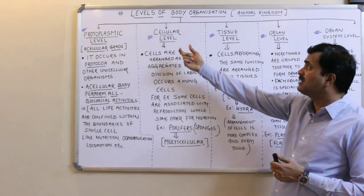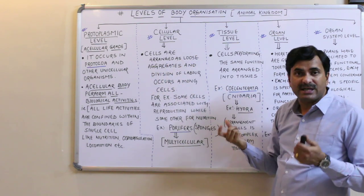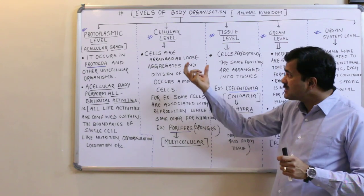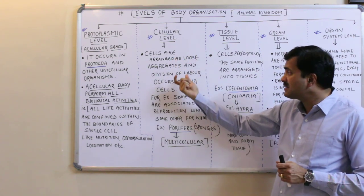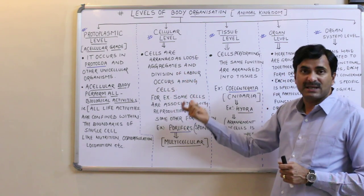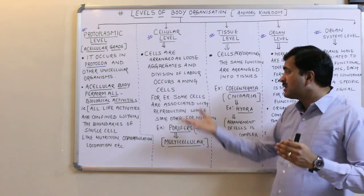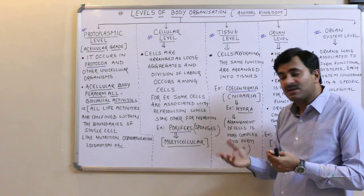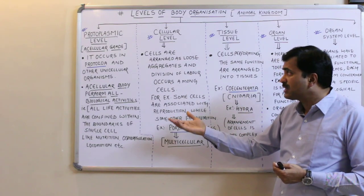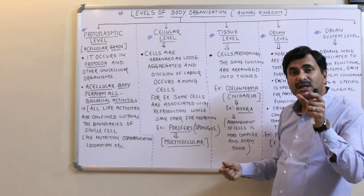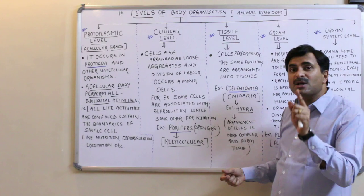The second grade is the cellular grade of body organization. Here, cells are arranged as loose aggregates, but tissue is not formed. Division of labor occurs among cells — different cells are given different types of work. Some cells are associated with reproduction, some with nutrition, some with respiration, etc. Though various cells are present, they remain in loose aggregates and are not able to combine to form tissue.